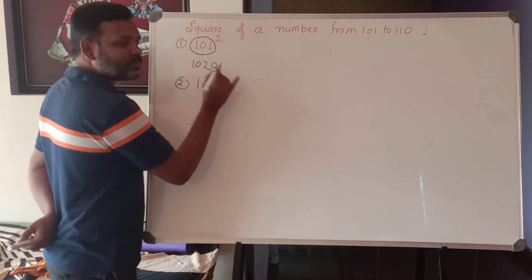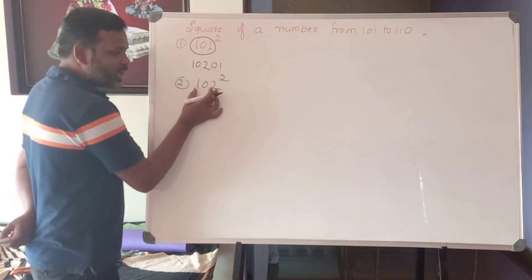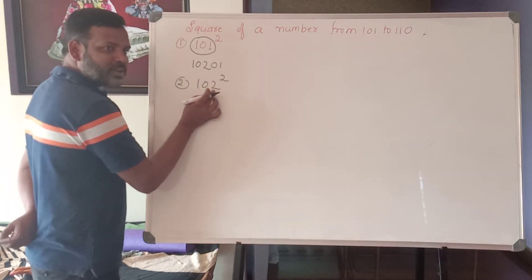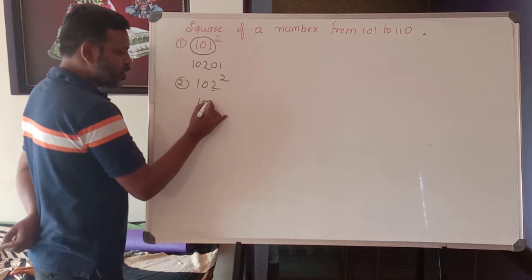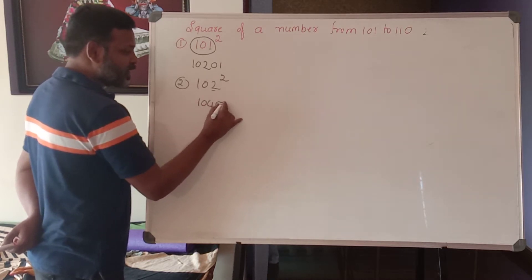102 square is there. The given number is 102. Add the last digit, 2. 102 plus 2, what happens here? 104. 2 square is what? 04.